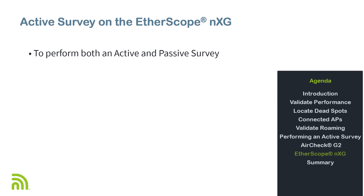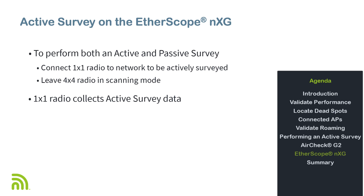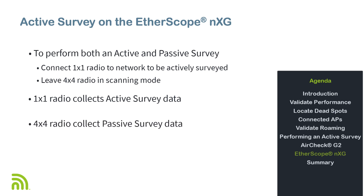If you want to perform both an active and passive survey, connect the 1x1 radio to the network to be actively surveyed. This is known as a dual survey. Both active and passive data is collected simultaneously — the 1x1 radio collects the active survey data, and the 4x4 radio collects the passive survey data. The main advantage of a dual survey is that should performance problems be discovered, the passive survey data can be used to identify the root cause.